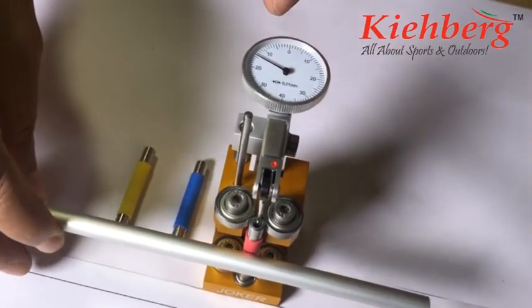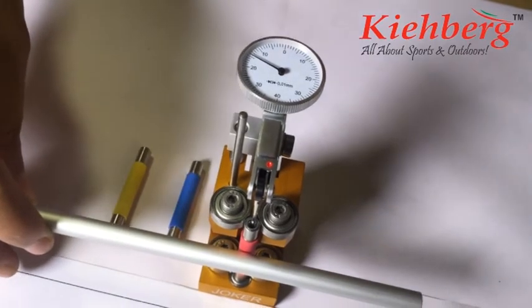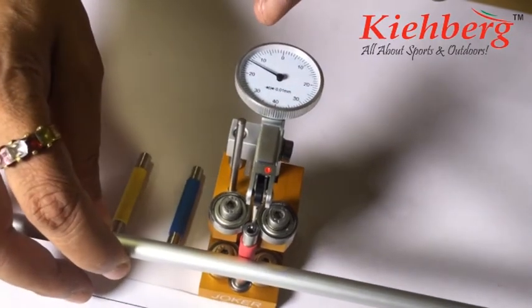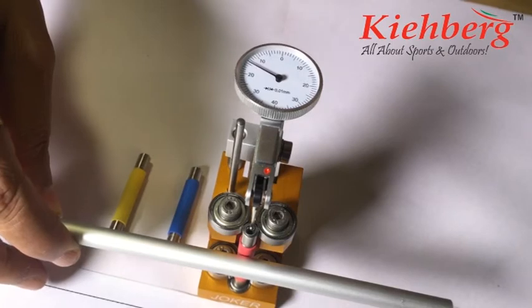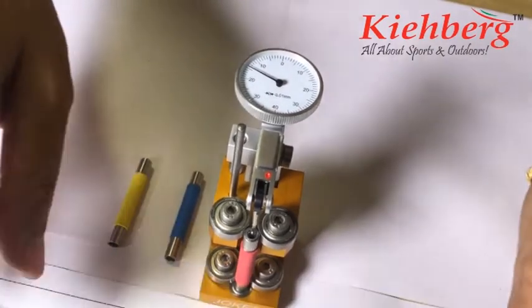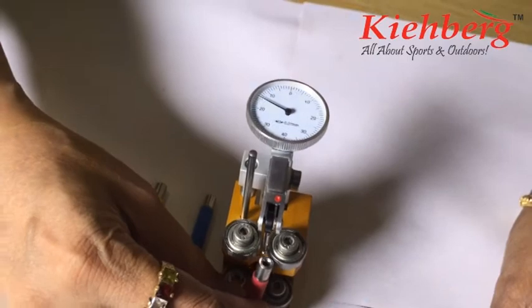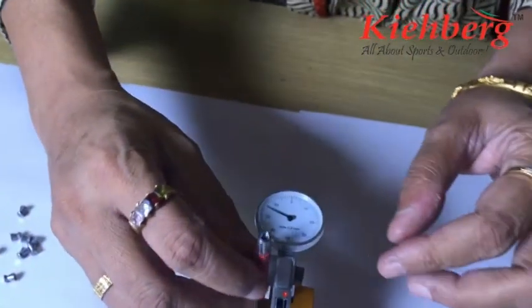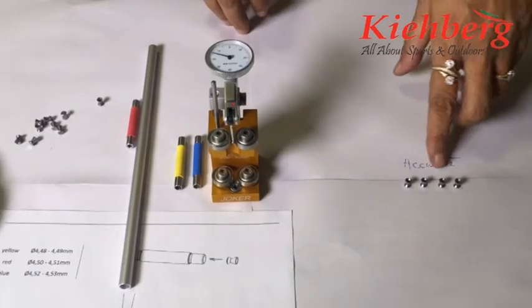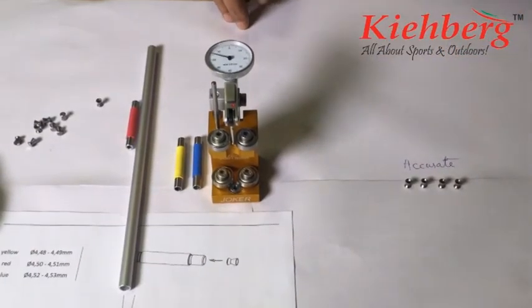The more the flickering, the worse is your ammo. This is the principle. Right now I can see that my pointer is not at all flickering, so I will definitely take out this air pellet to be the most accurate pellet for my shooting. These are the air pellets which I found to be the accurate ones after testing with this Joker device.